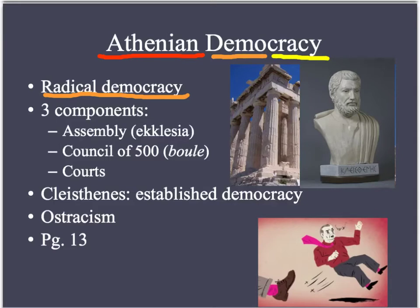Now, the office holders who ran the government on a day-to-day basis were usually chosen by lot. This sounds a bit scary, but there were checks: you had to put your name forward, there was a screening process, people knew who you were so there was a societal check, and performance was reviewed. The only important positions not chosen by lot were the treasurer and the generals. There were ten generals from the ten tribes, chosen for their experience — and that's where the famous general Pericles came from, who is very important later in Athens.